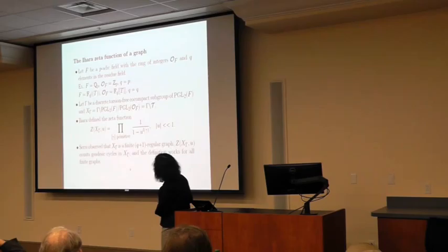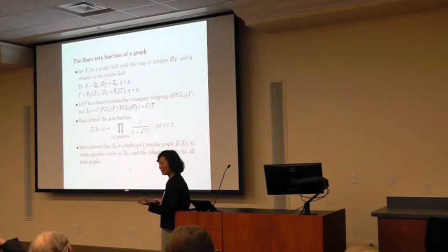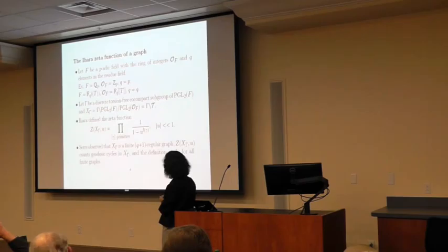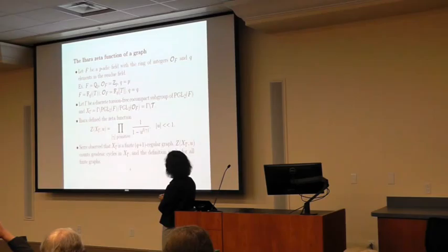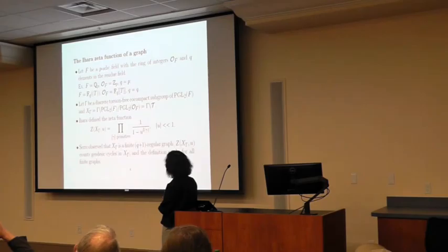The question then is: Selberg's zeta function counts geodesic cycles, but what does Ihara's zeta function count? Serre observed that PGL₂(F) modulo the maximal compact subgroup is actually a tree — a regular tree. Then this quotient X_Γ is a finite quotient of this (q+1)-regular tree, so it is a (q+1)-regular graph. The zeta function precisely counts the geodesic cycles in this graph. Therefore, when you see things this way, Ihara's definition works for all finite graphs.